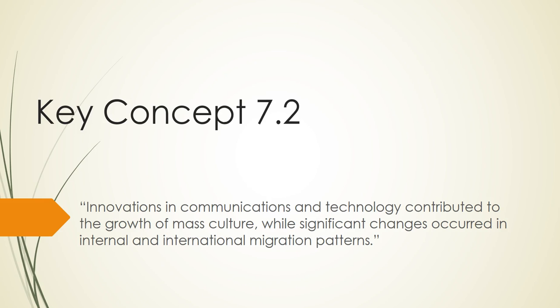Whereas Key Concept 7.1 covers the Progressive Era — the 1910s, early 1900s — and then the Great Depression and New Deal from 1929 to 1940, it kind of skips over the 1920s. Key Concept 7.2 is where we get the 1920s.